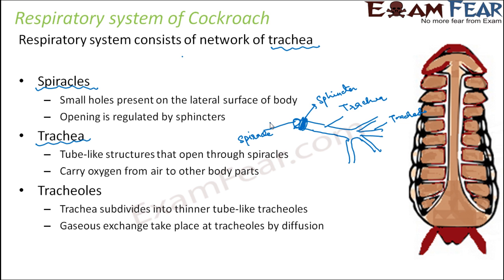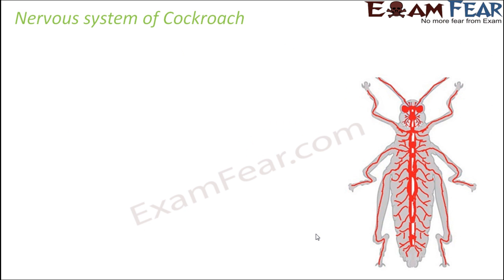Gas from outside enters inside through the spiracle, then goes through the trachea and reaches the tracheoles. These tracheoles are in direct contact with the cells of the body, so the actual exchange of gases takes place between tracheoles and the body parts by the process of diffusion. This is how respiration takes place in cockroach.